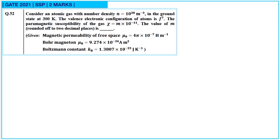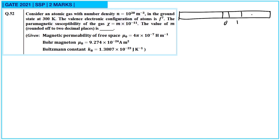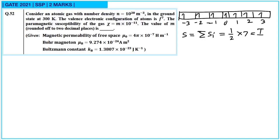Next: consider an atomic gas with number density n = 10²⁰ m⁻³ in the ground state at 300 K. The valence electronic configuration is F⁷. Since it is in the F state (l = 3), the ML values range from −3 to +3, giving seven electrons. With all spins parallel, S = 7/2. Summing all ML values (−3 + −2 + −1 + 0 + 1 + 2 + 3) gives L = 0.